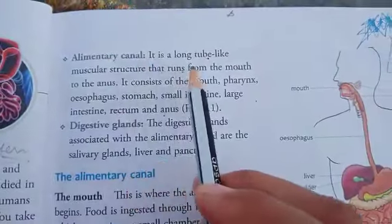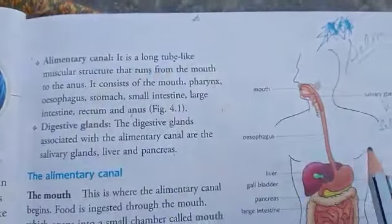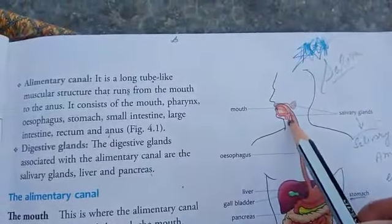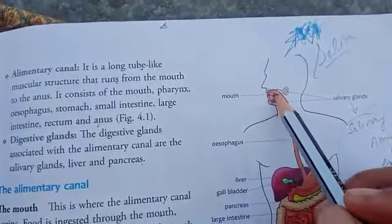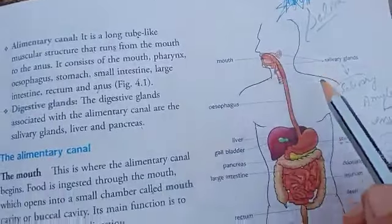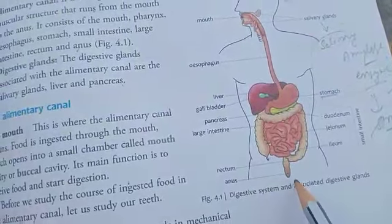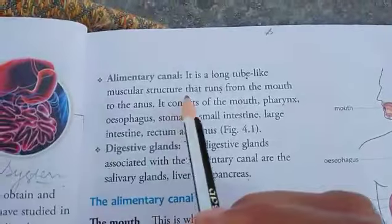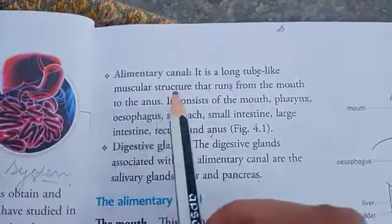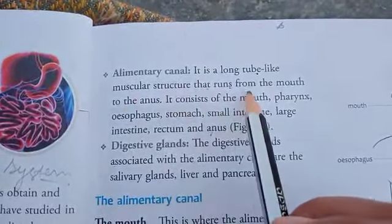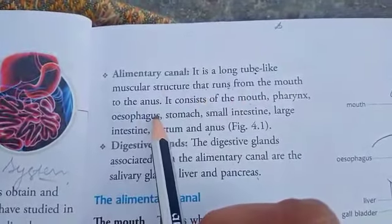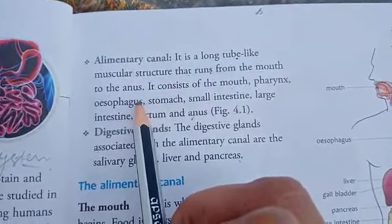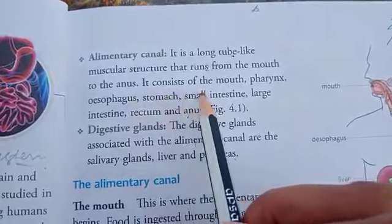The alimentary canal is a long tube-like muscular structure which starts from the mouth and ends at the anus. It consists of the mouth,